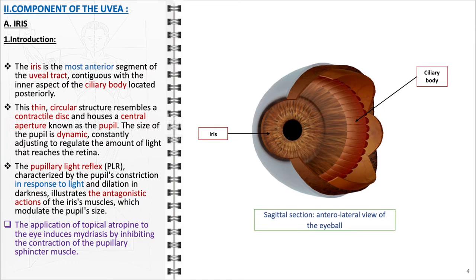From a clinical perspective, the application of topical atropine to the eye causes mydriasis, which is the dilation of the pupil. This occurs due to atropine's inhibition of the pupillary sphincter muscle's contraction, preventing it from constricting the pupil.